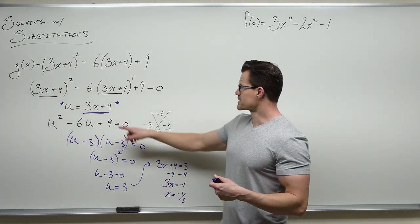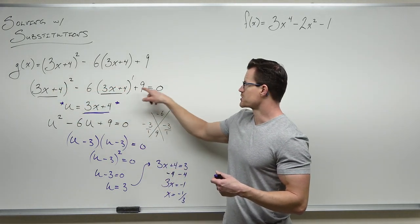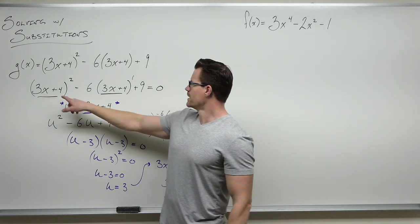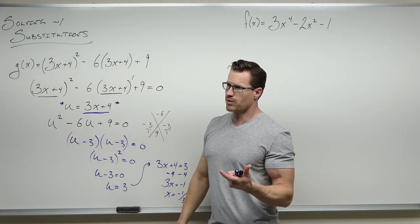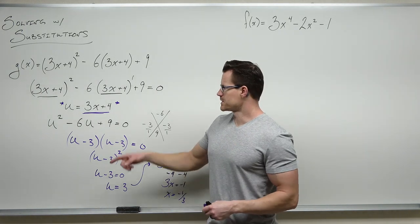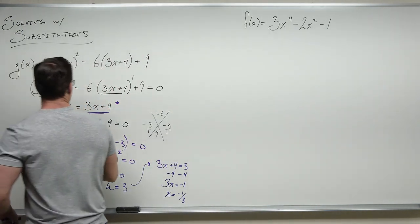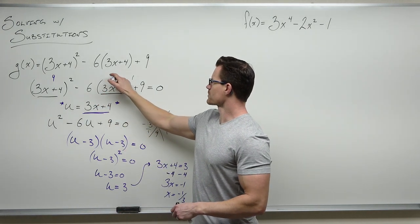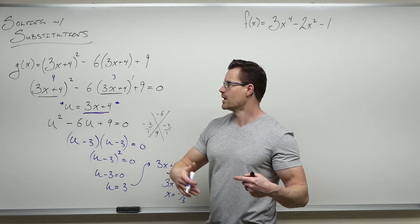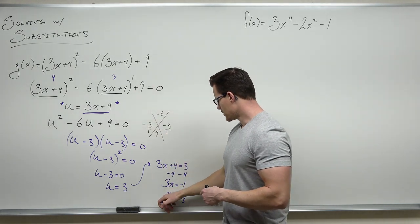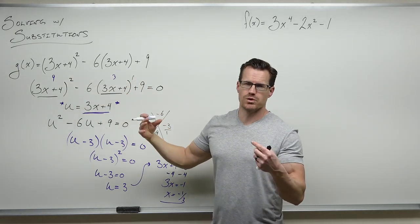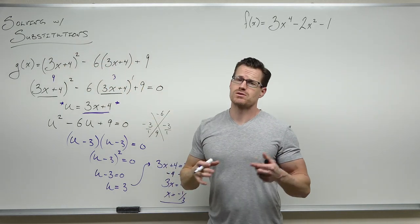Let's verify: plug negative one-third in. 3 times negative one-third is negative 1, plus 4 is 3. 3 squared is 9. Plug it into the middle term, we still get 3, but 6 times 3 is 18. 9 minus 18 is negative 9, plus 9 gives us zero. This is a solution and the only solution — and therefore the root, zero, x-intercept of this function. Using substitution here is better than distributing everything and spending a lot more time for the same answer.